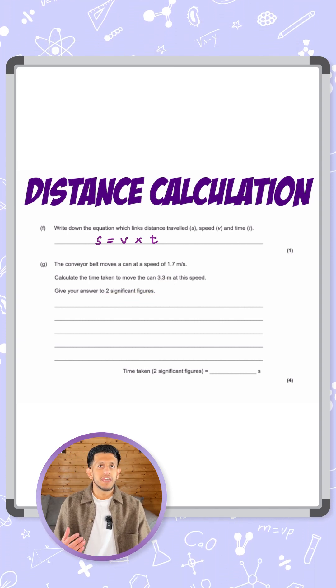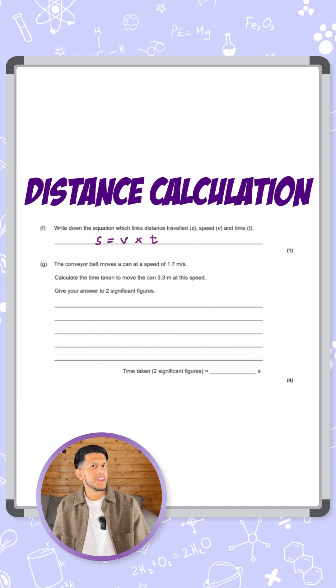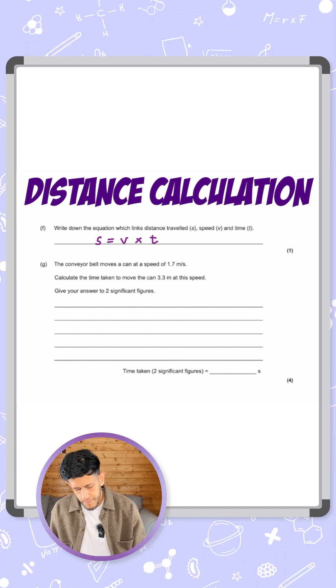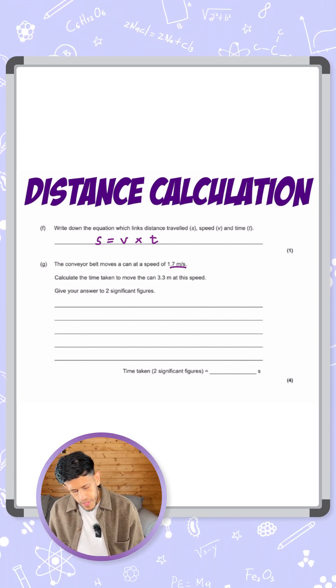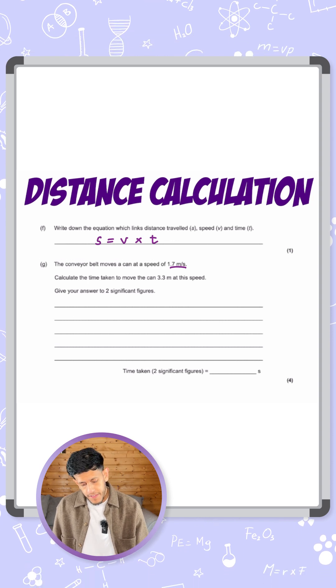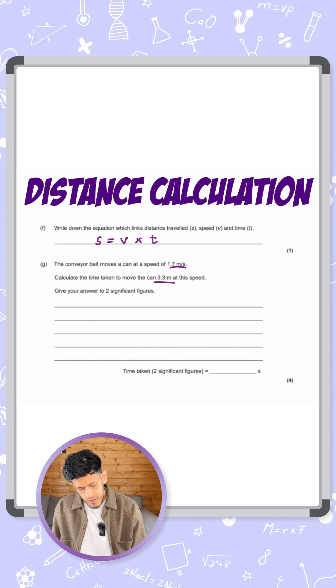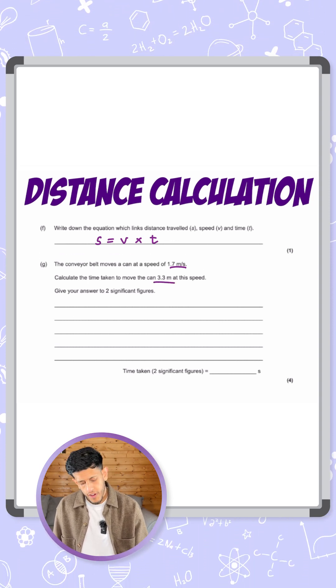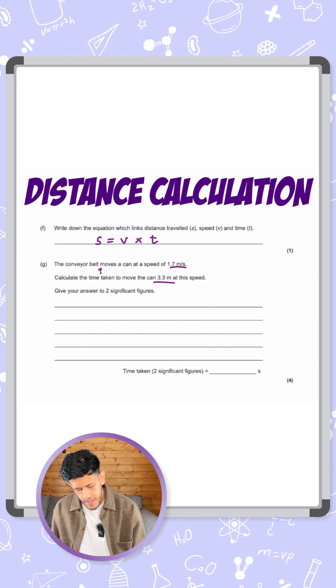I'm going to underline the key points: what we are given, what we need to find out, and then we can work out the answer from there. So firstly the speed is 1.7 meters per second—they've given us that. They've then also told us the distance is 3.3 meters, and they've asked us to calculate the time taken and give your answer to two significant figures.